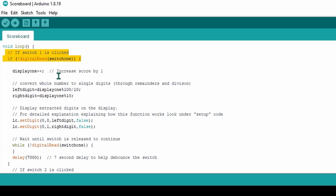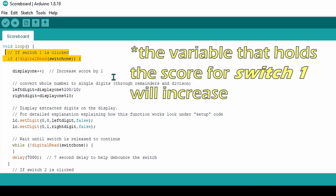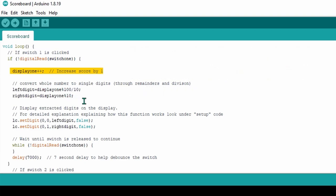Here, we check if one of the switches has been pressed. For example, if switch 1 has been pressed, then the variable that holds the score will increase by 1. Then this part of the code splits the score into two digits.